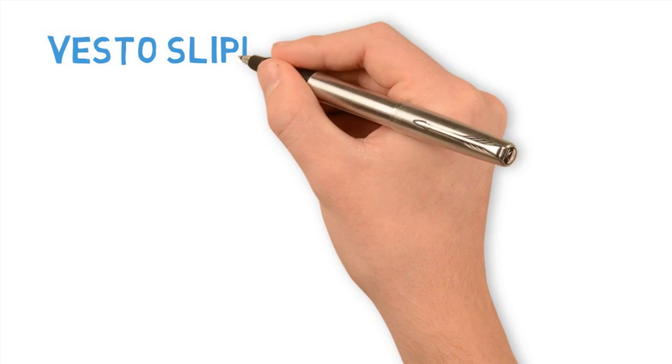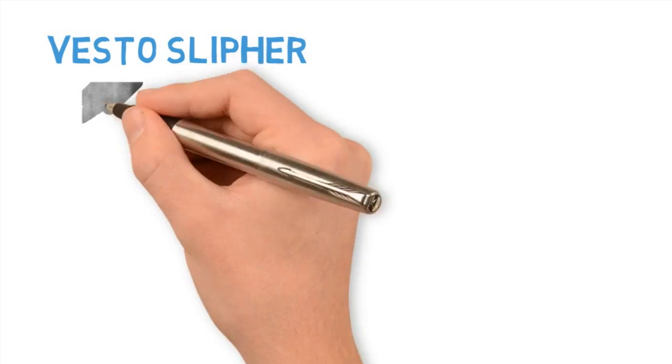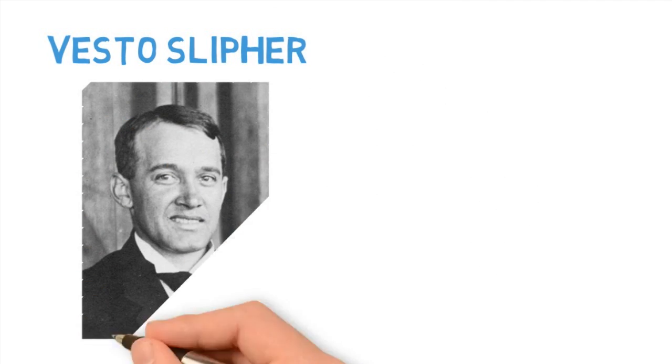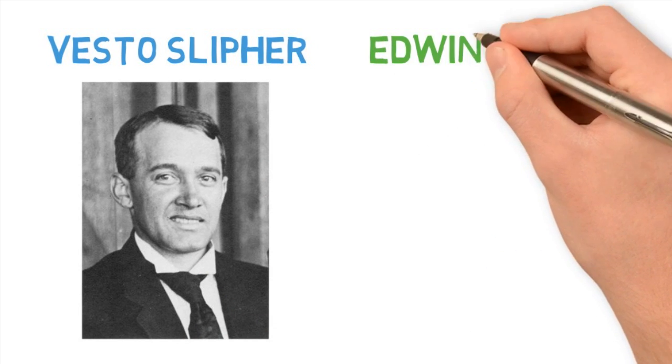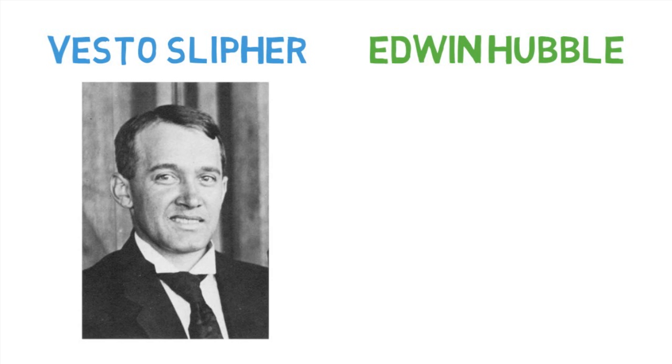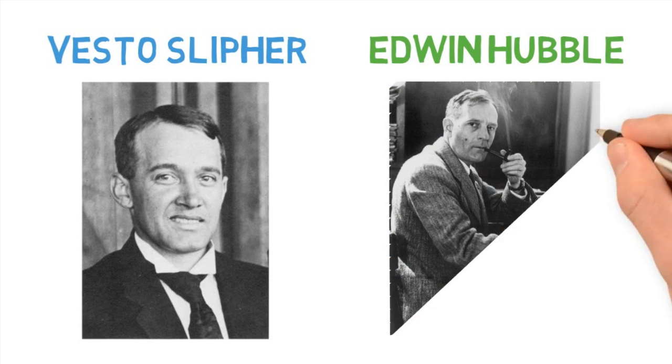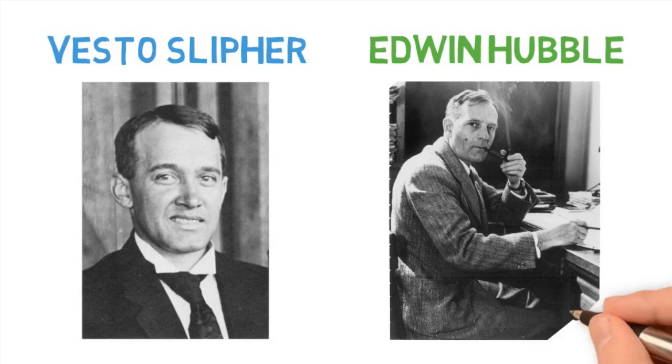Vesto Slipher first observed in 1917 that the spectra of many distant objects in the cosmos are red shifted. Edwin Hubble later realized that this is due to the objects moving away from us.